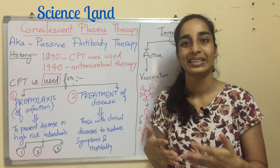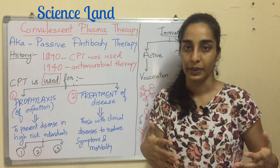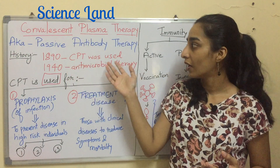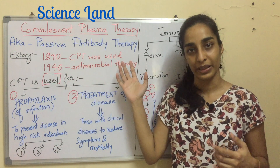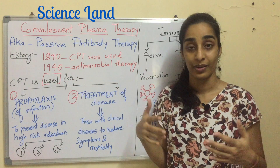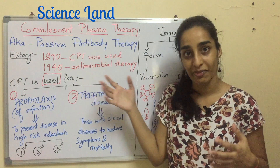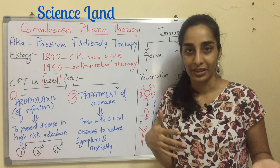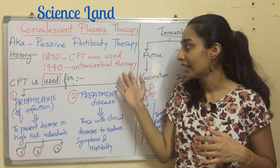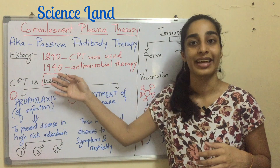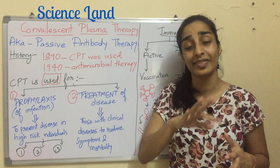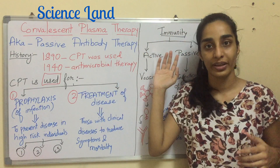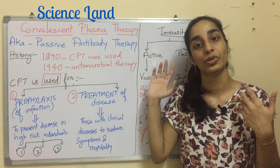Let's talk about the history of convalescent plasma therapy. In the 1890s, convalescent plasma therapy started. This was the time when there was not even antimicrobial therapy — antimicrobial therapy started in the 1940s, about 50 years later. So it is a very old technique to treat somebody.